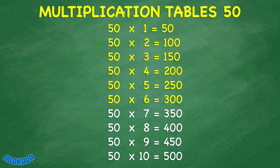50 times 7 equals 350. 50 times 8 equals 400. 50 times 9 equals 450. 50 times 10 equals 500.